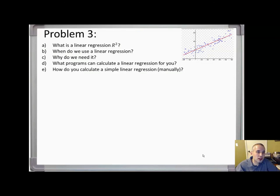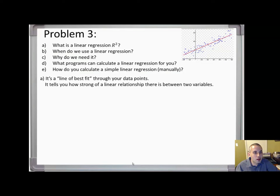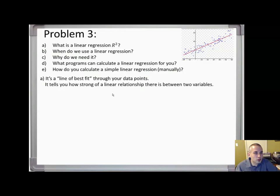A little bit of data analysis now: what is a linear regression or R-squared? Essentially, a linear regression R-squared is a line of best fit through your data points — here the red line through the data points represents a linear regression. It tells you how strong a linear relationship there is between two variables.